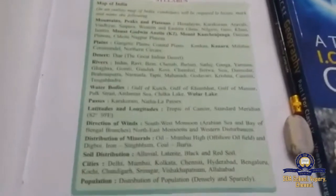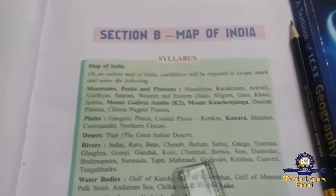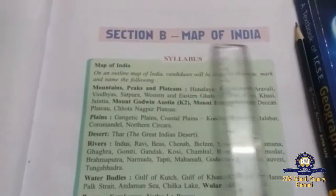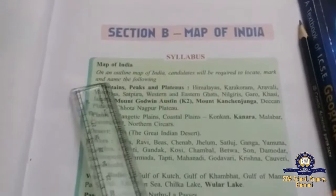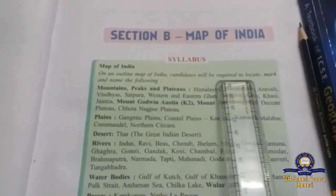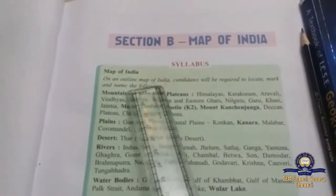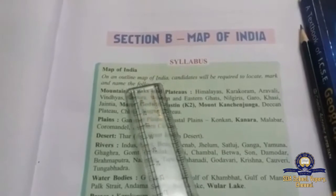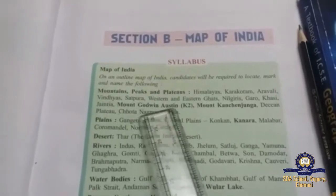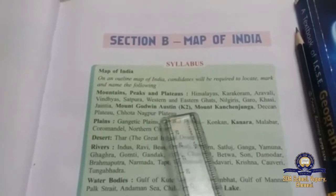We will learn all this in the next class. For everything you have to make a map — a map of India. On an outline map of India, candidates will be required to locate, mark, and name the following. So you must know, you must practice. You cannot escape. Do your map, then we learn the lessons.